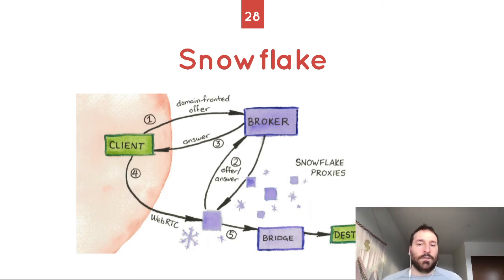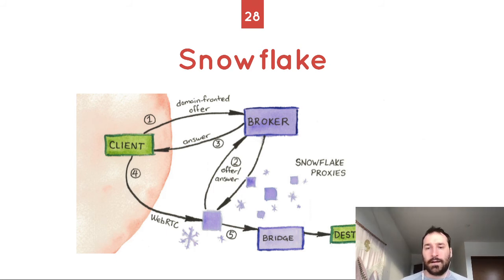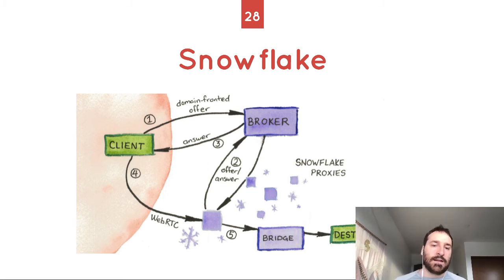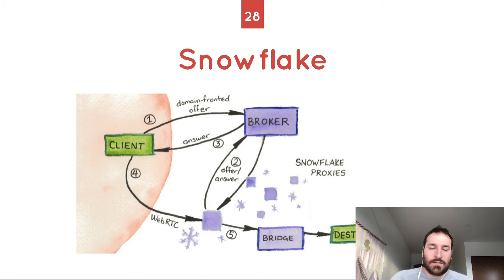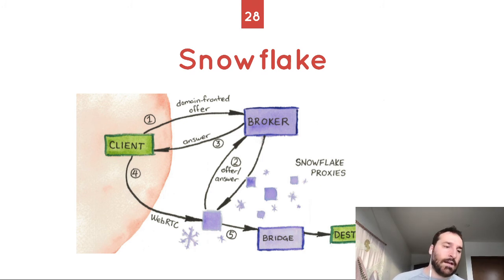Snowflake was one of the original Pion projects that brought more attention to Pion. It uses the data channel to do censorship circumvention. A user can request over data channels: please send me this website that's blocked by my ISP or my government. It downloads it and sends it back over WebRTC. You don't have to download a separate binary that's probably already blocked. You can't block WebRTC since it's used by so many important services like Hangouts and Zoom.